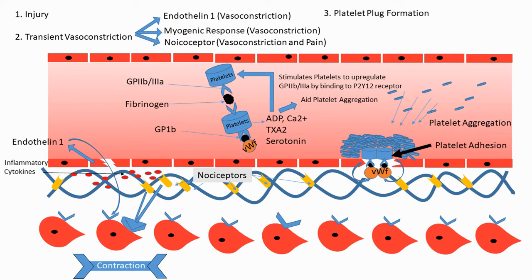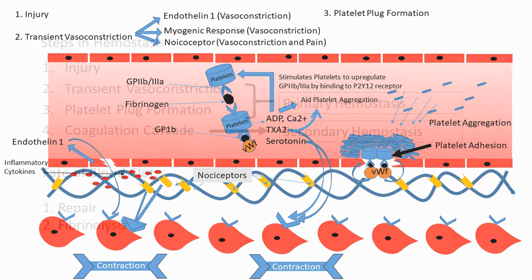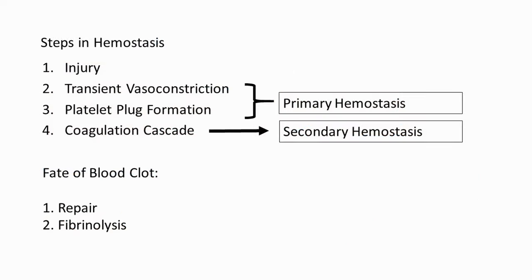Calcium is involved mainly in the coagulation cascade, which we'll cover in the next step. Thromboxane A2 is also involved in platelet aggregation, and together with serotonin, acts on smooth muscles to cause vasoconstriction, preventing more blood from leaking out. This marks the end of the third step — primary hemostasis.